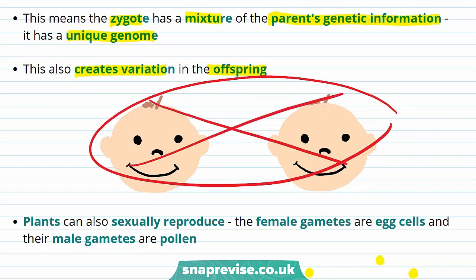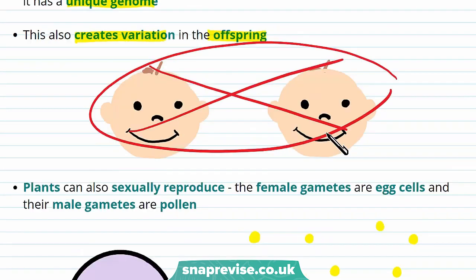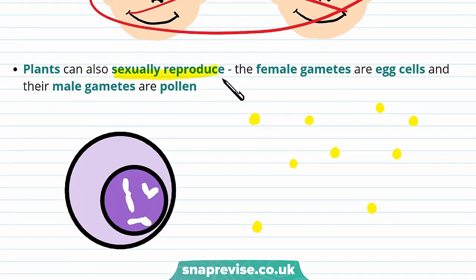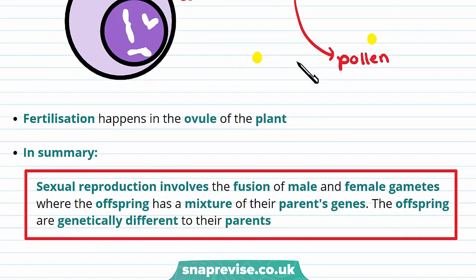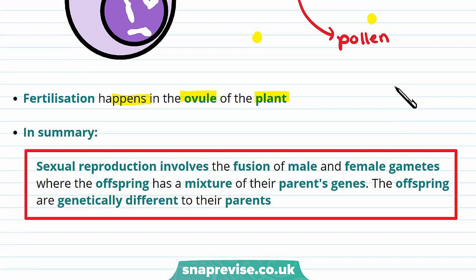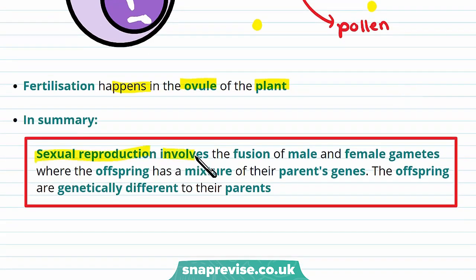Sexual reproduction doesn't only happen in animals — plants can also sexually reproduce. In plants, the female gametes are egg cells and the male gametes are pollen, and fertilisation happens in the ovule of the plant. To summarise: sexual reproduction involves the fusion of male and female gametes where the offspring has a mixture of their parents' genes, and the offspring are genetically different to their parents.